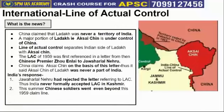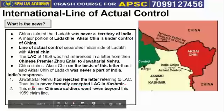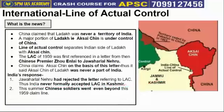India had written back and rejected the letter referring to the Line of Actual Control, and had stated that Aksai Chin is India's territory. Jawaharlal Nehru had rejected the letter referring to the Line of Actual Control, and India never formally accepted the Line of Actual Control in Kashmir. India responded that it never formally or officially acknowledged Aksai Chin as Chinese territory, and had rejected that letter in which the LAC was mentioned.